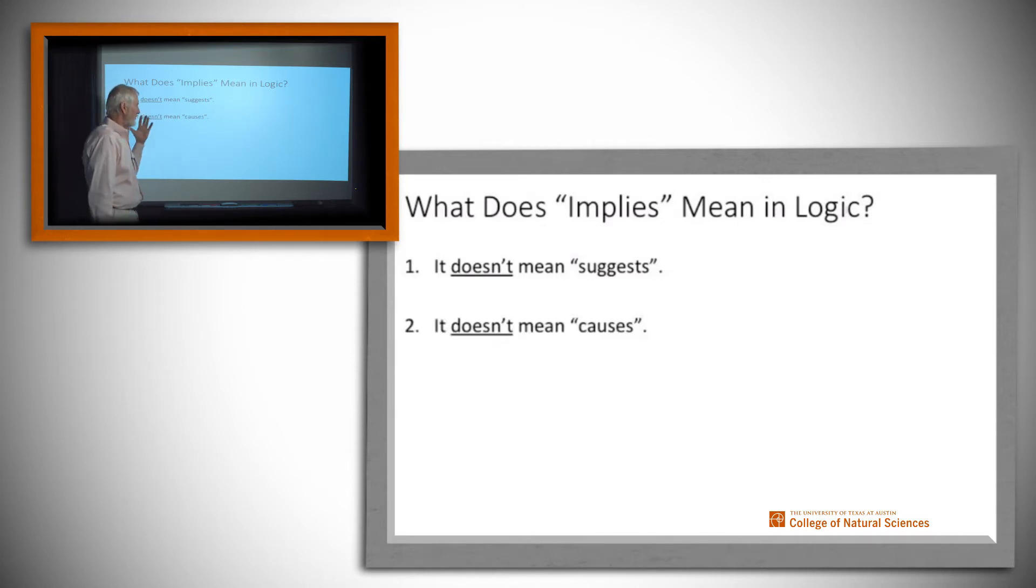Secondly, there is no causation intention attached to our logical meaning of implies. So I can say green is a color implies January is a month, and that is a logical, true implication, even though there is no causality in that. It is not the case that green being a color somehow causes January to be a month, and we don't care in logic. So there's no causation suggested when in logic we say implies.